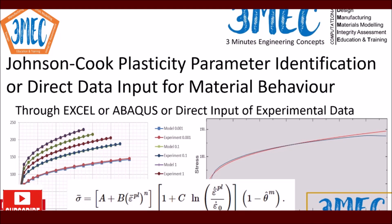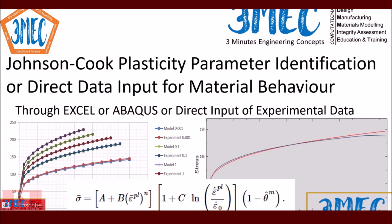Hello everyone, welcome to today's video. I will explain how to identify material parameters for the Johnson-Cook plasticity model. I'm going to show you two ways of doing it: one is using Excel, because it's generally a uniaxial case so you can manage with Excel — it's a one-dimensional problem in reality — and also how you can do it in Abacus, which is a more tedious way of doing it unless you know Python.